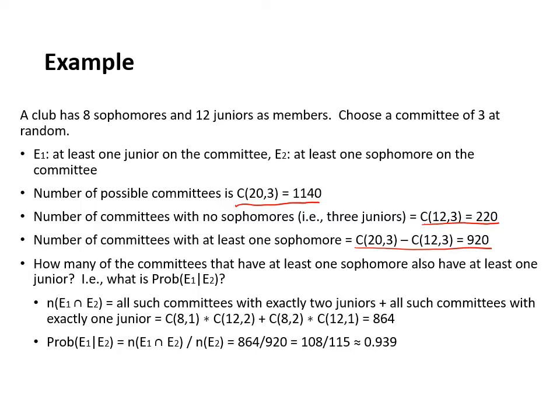Now the question is: how many of the committees that have at least one sophomore also have at least one junior? That is, what is the probability of e1 given e2? To compute this, we first compute the size of the intersection of e1 and e2. This intersection counts all committees that have exactly two juniors plus all committees with exactly one junior. In the first case we have one sophomore and two juniors; in the second case we have two sophomores and one junior. The number we get is 864.